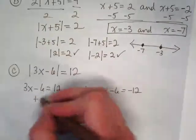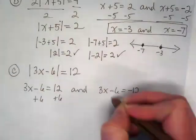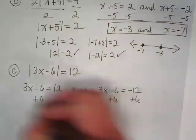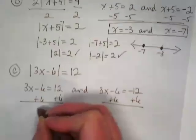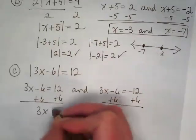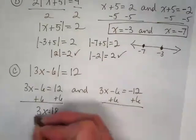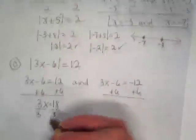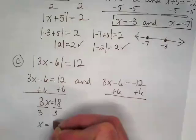I get plus 6 for everything. 3X on the right is equal to 18. X is equal to 6.